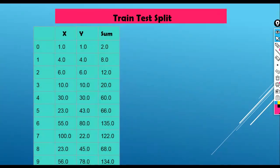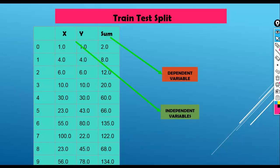As you can see here, we have a very small dataset where X and Y are our independent variables and Sum is our dependent variable. Using X and Y we are going to predict the sum of two numbers. I have created this dataset to perform addition of two numbers using machine learning.